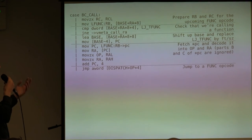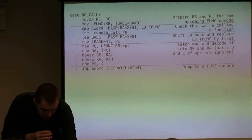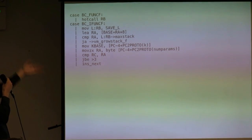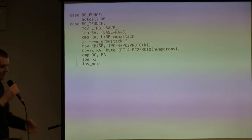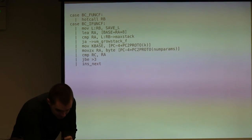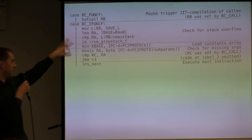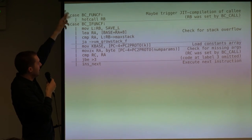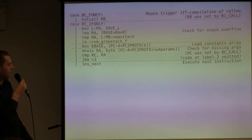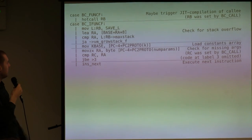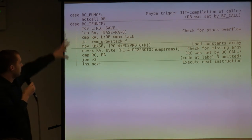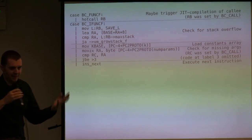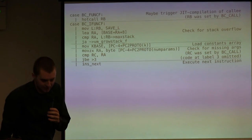There's also the JIT path: if it's JIT-compilable, then JIT it maybe; if not, do the normal thing. There are checks and loads, but essentially function calls are really cheap.